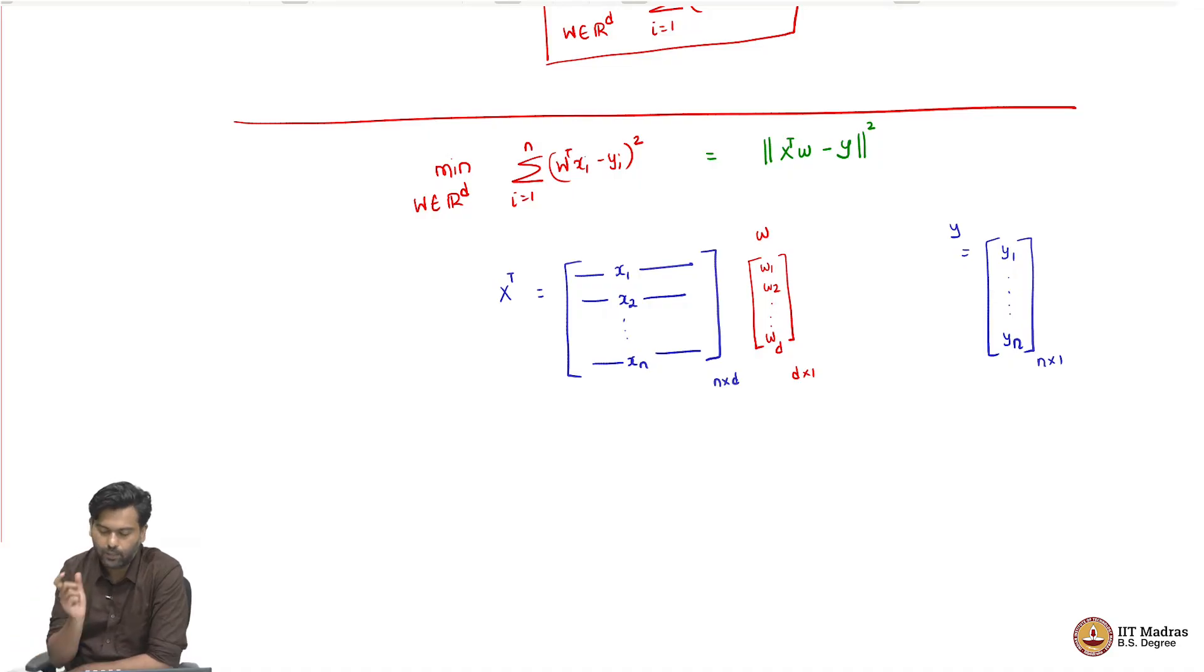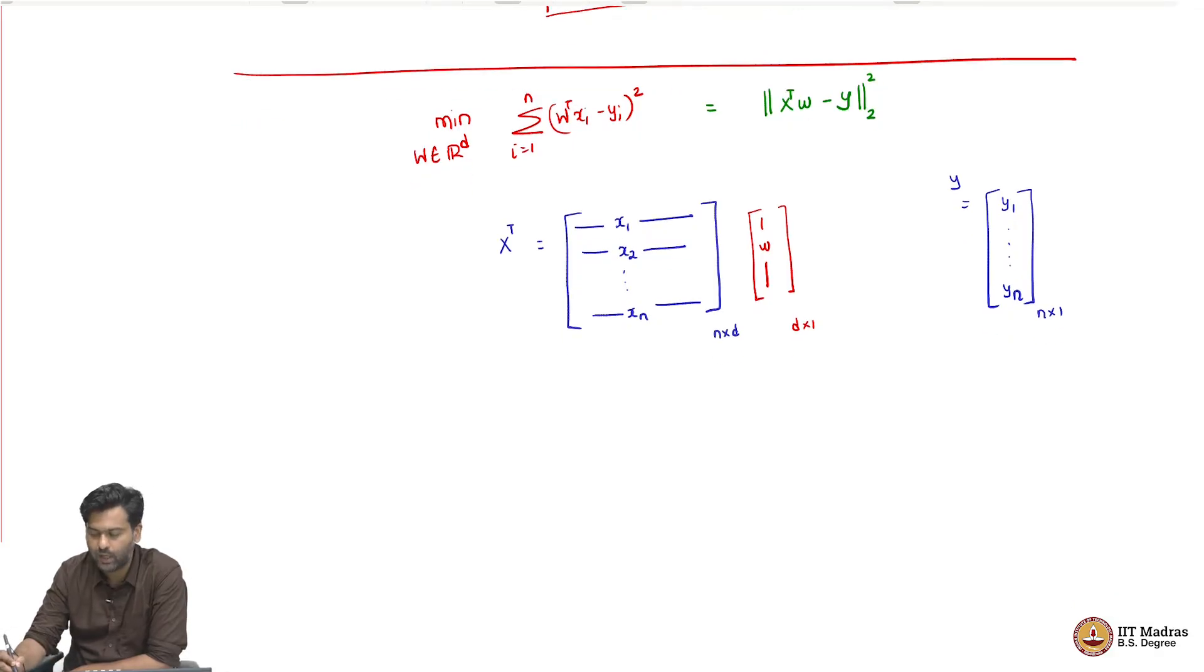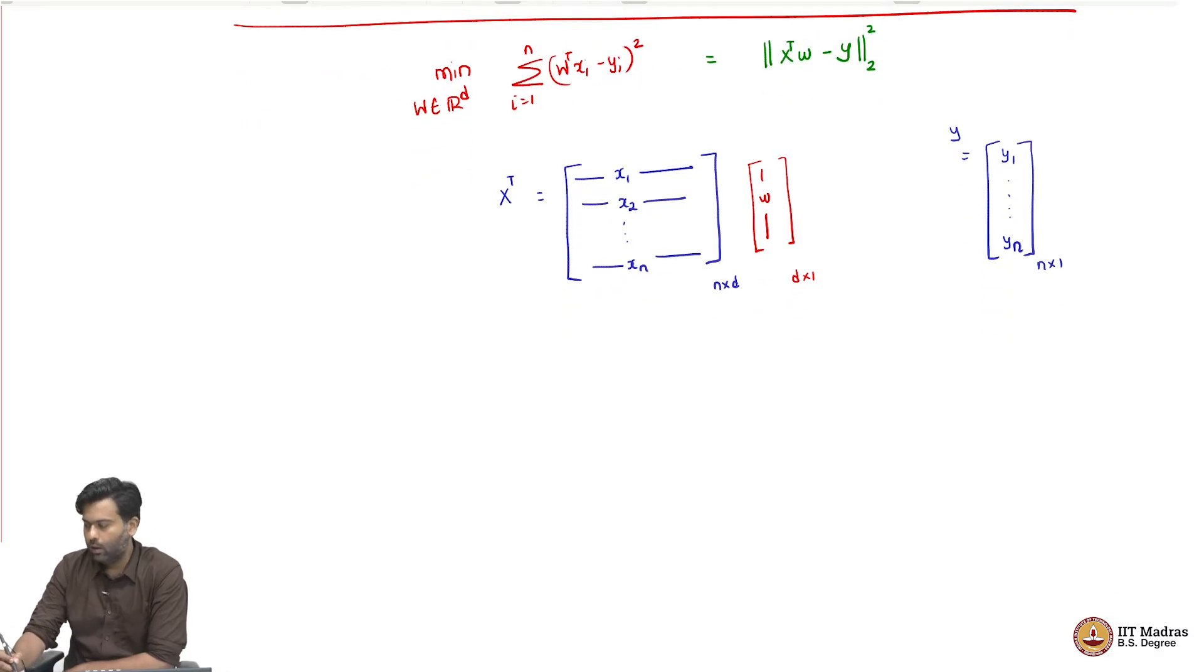Why? Because X transpose W would give me X1 transpose W, X2 transpose W and so on. It is easier to think of this as just a vector w and X transpose W is X1 transpose W, X2 transpose W vector containing all data points, dot product with W and then we are comparing it with Y corresponding YI and then squaring it, which can be thought of as just the L2 norm squared of this vector, which is an n dimensional vector.